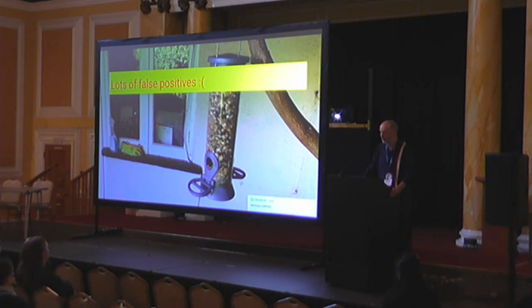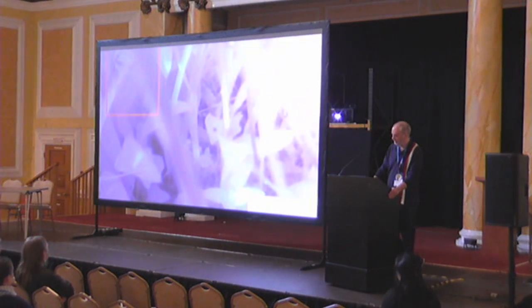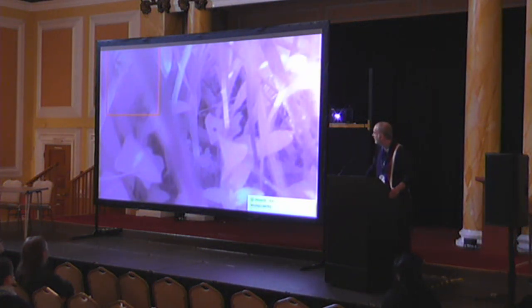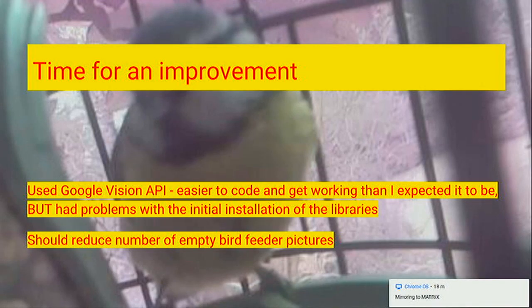Something moves in the undergrowth, leaves blowing in the wind, a shadow changes — it takes the picture. I thought I'd have to make some improvements, which is why I went back to the Pi Timolo library. So I started using the Google Vision API, which was really pretty simple to code. I had a few problems installing the library but got it to work eventually. I hoped that if it knew it was looking at a bird, it would take a picture and reduce the number of empty bird feeder shots.